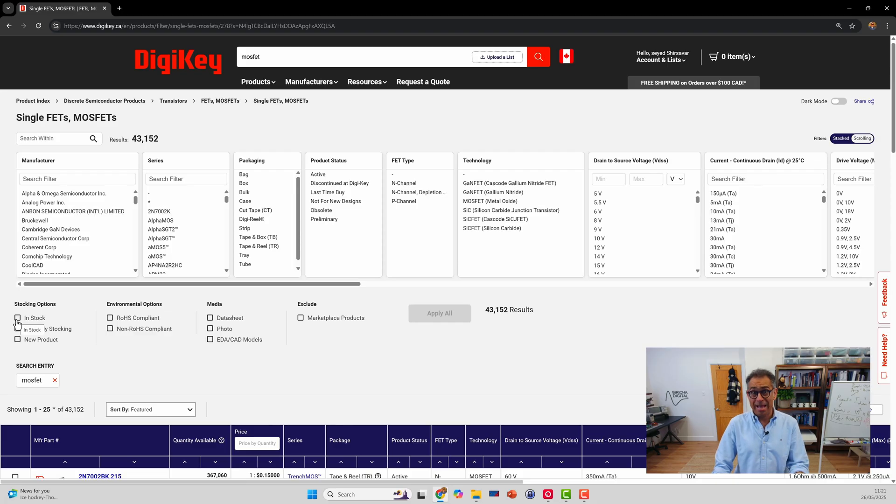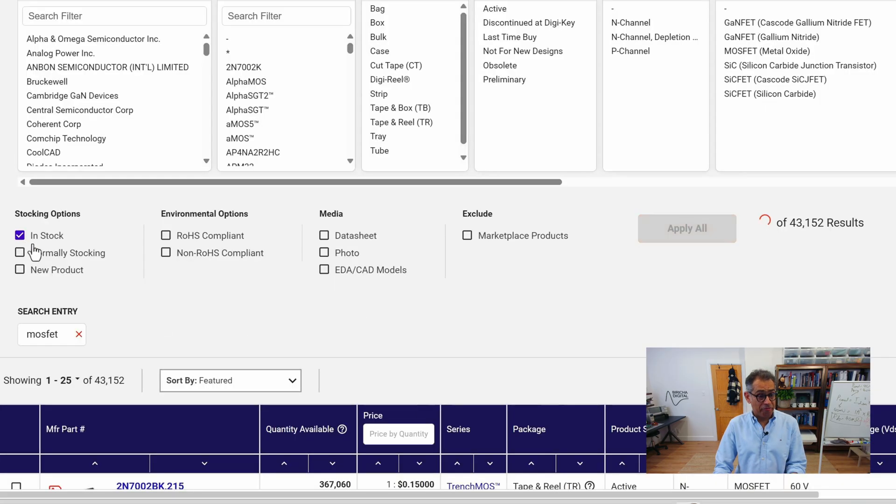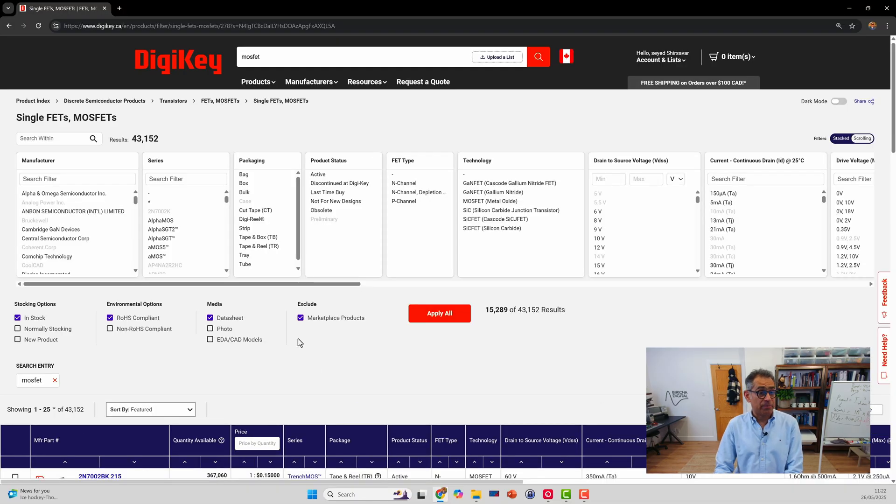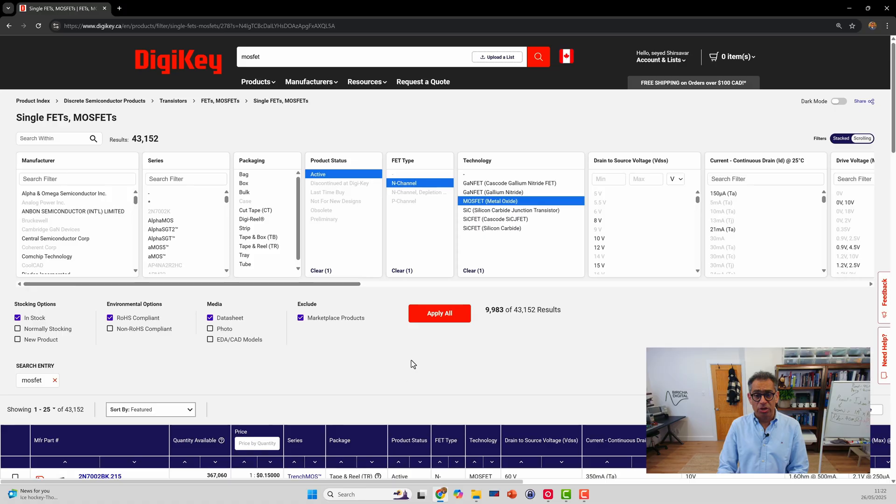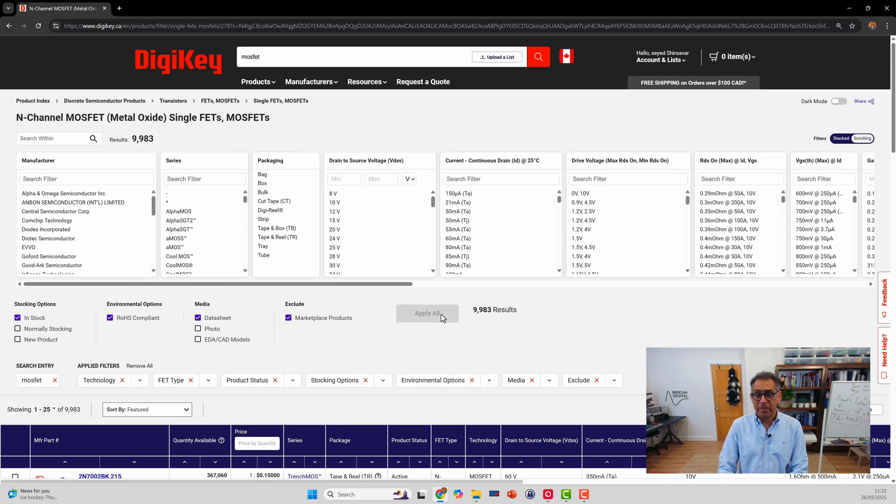First, however, I'm going to narrow it down a little bit more. You don't have to do this. I'm going to look for, in stock, ROHS compliant. Obviously, I would like to have the datasheet. And for now, I'm going to exclude the marketplace products. So, we just look at what is available on Digikey. And then, we are looking for active, so we don't want to buy an old MOSFET or one that's been discontinued. N-channel MOSFET. And you'll see that my choices fall from 43,000 to just under 10,000. So, we apply all of that.